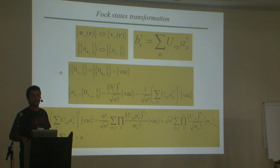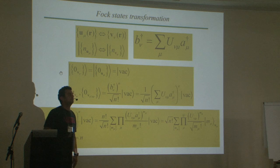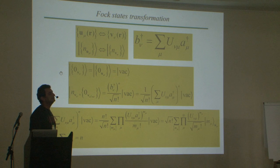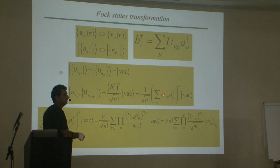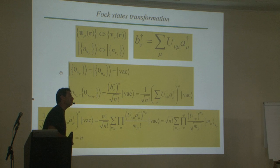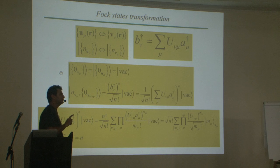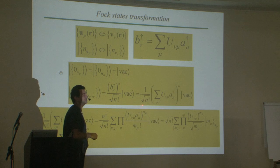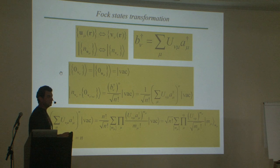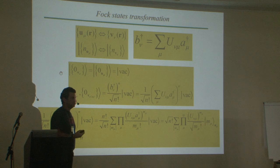Any questions so far? — The U matrix here: is that a matrix or an element of a matrix? — It is a unitary matrix, but not a quantum operator — it is simply a unitary matrix. The entries U_{μν} are elements of the matrix. The matrix must have as many elements as there are modes involved in the transformation. It will become clear when we come to the simple examples.